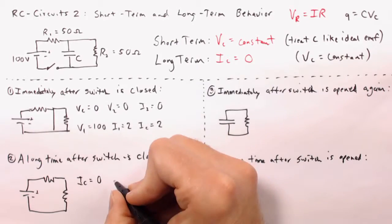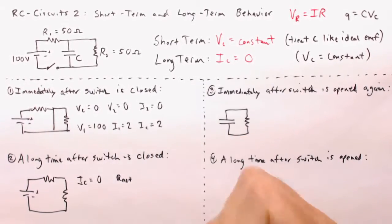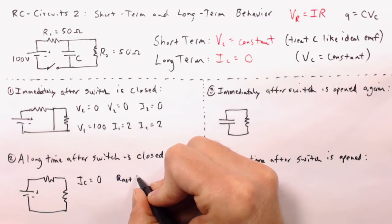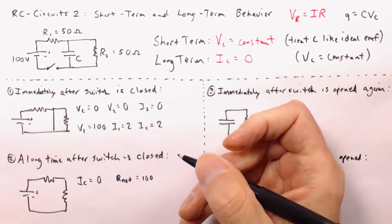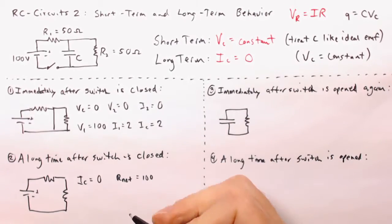So with this single loop, we can determine the net resistance for the entire loop is just the sum of the two, because they're in series, that's 50 plus 50, that's going to be 100 ohms, and with that information, we can find the current.